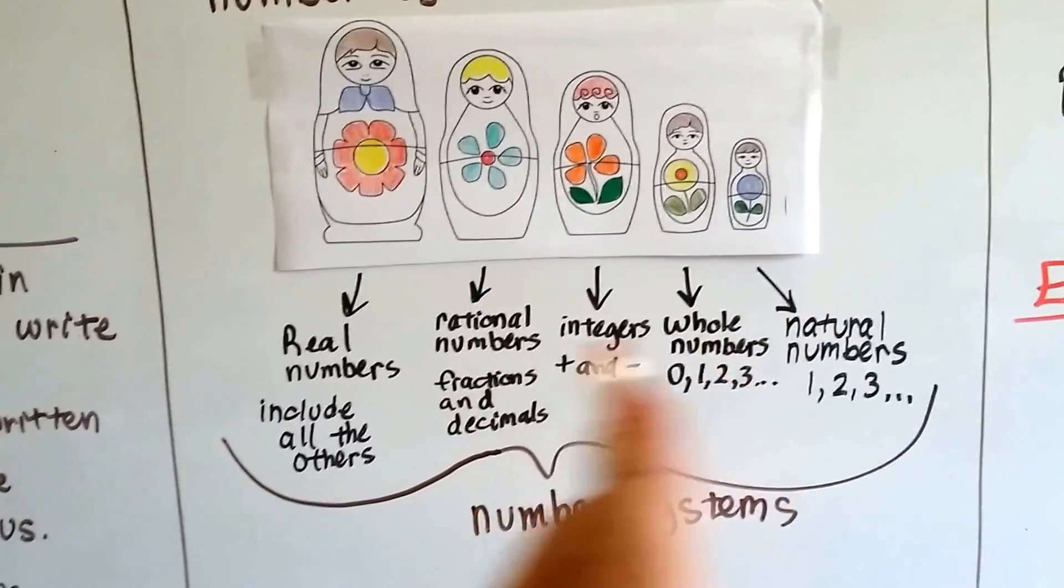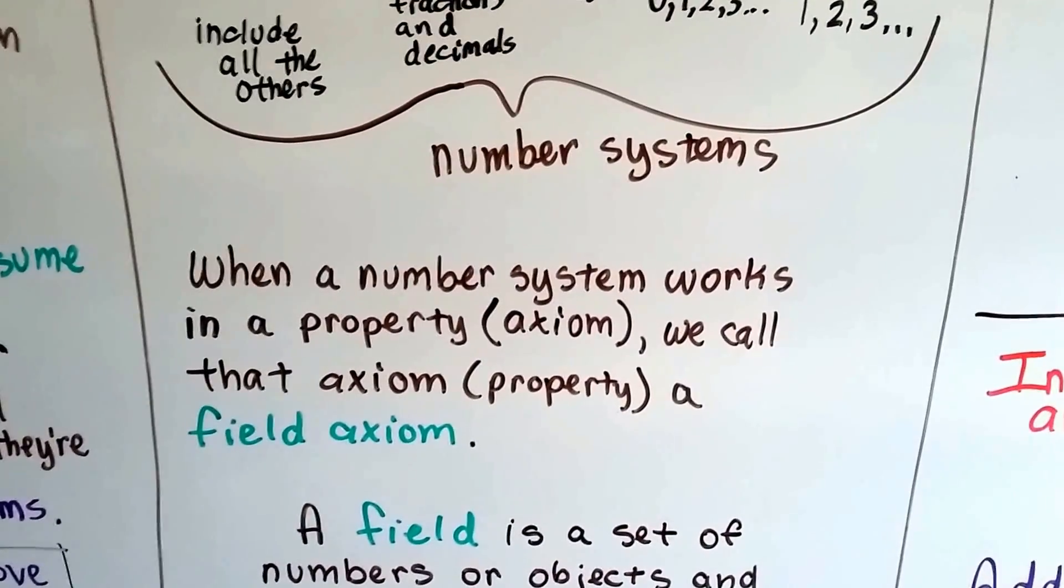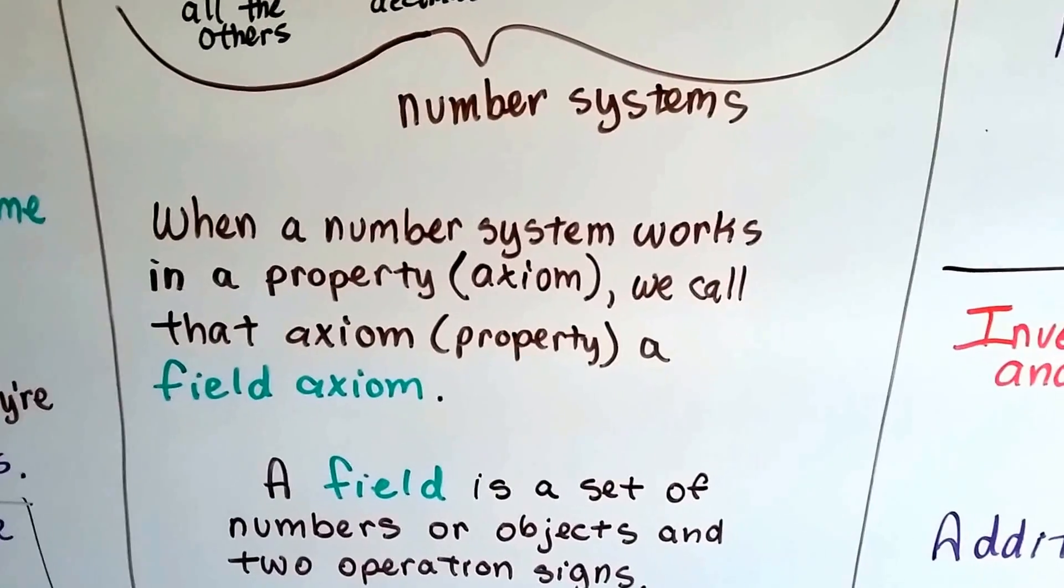And they all can fit inside of real numbers. That's all of these included. So these are the number systems. When a number system works in a property, an axiom, we call that axiom, that property, a field axiom.